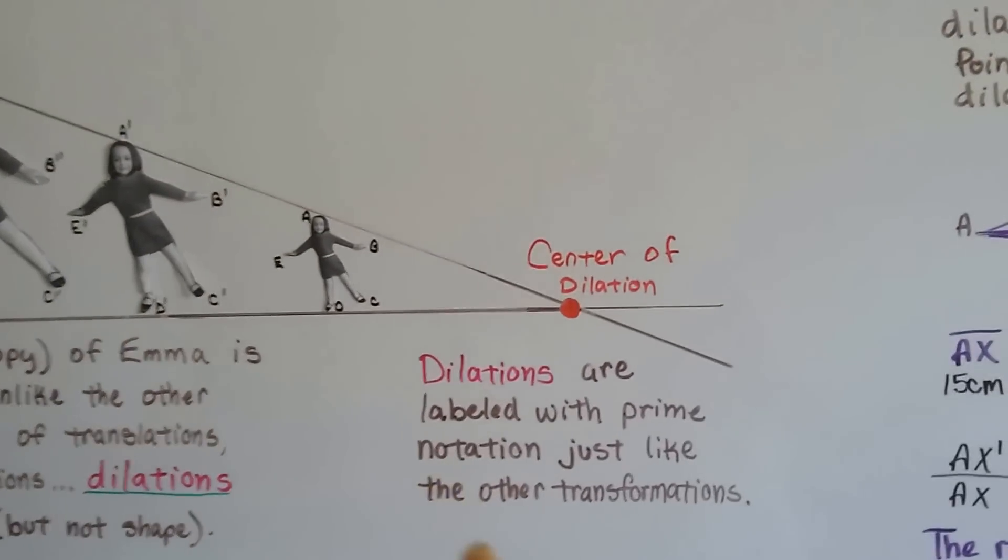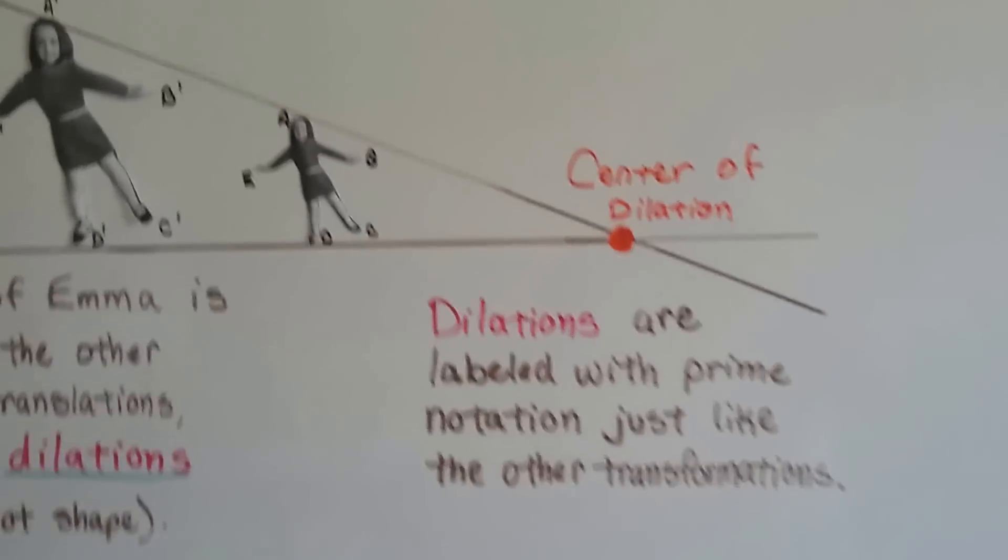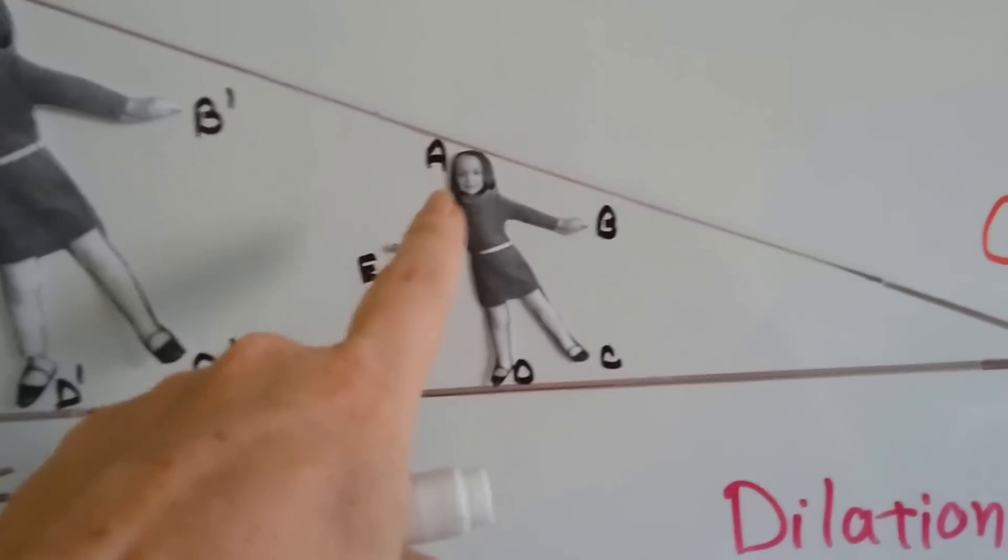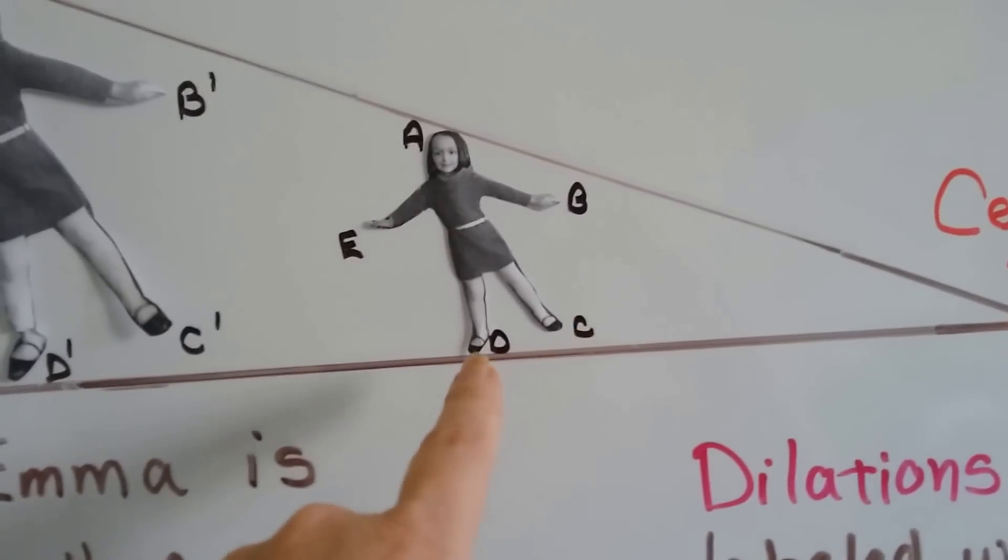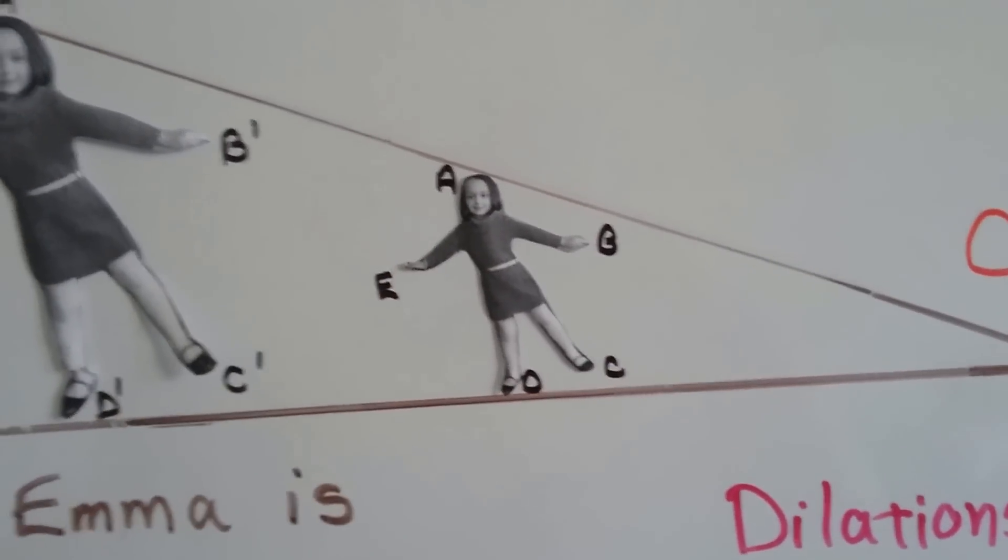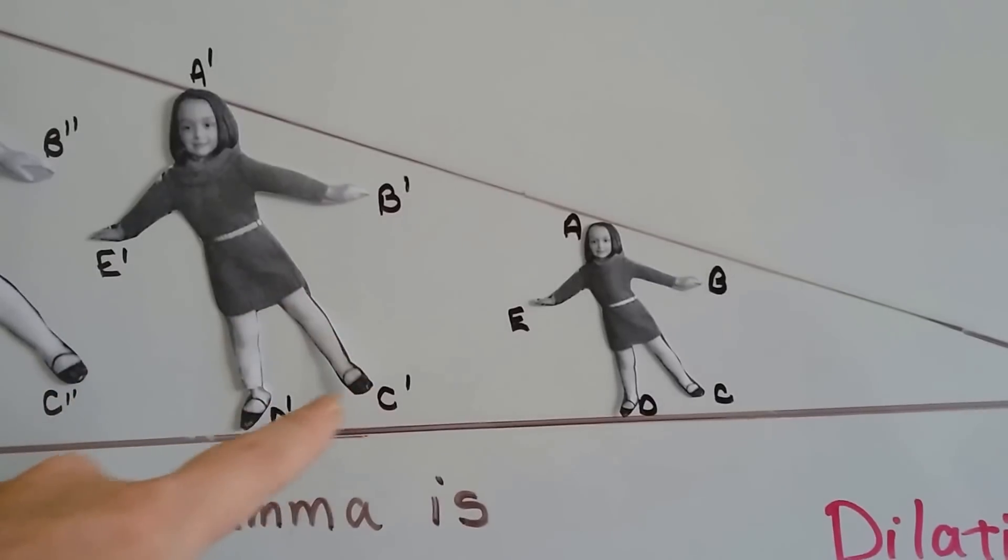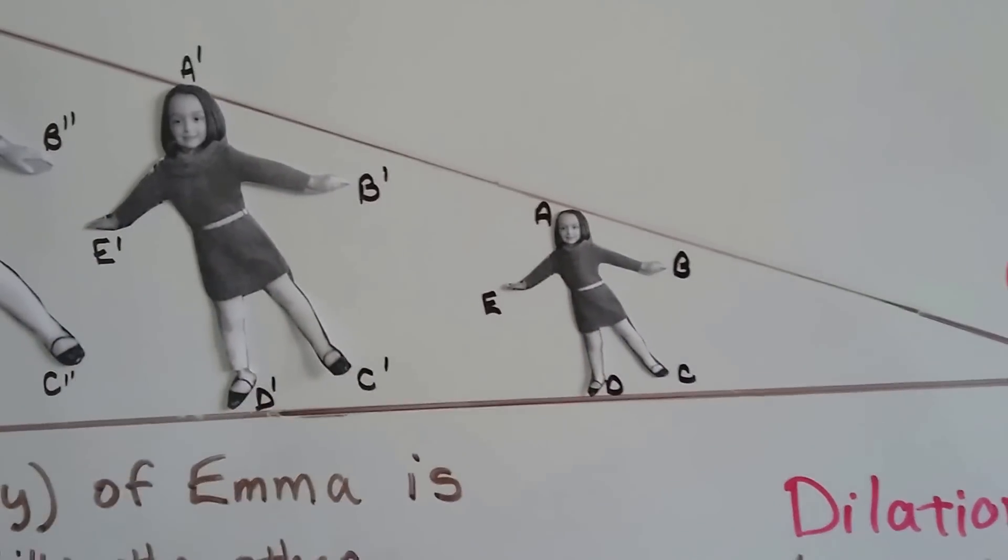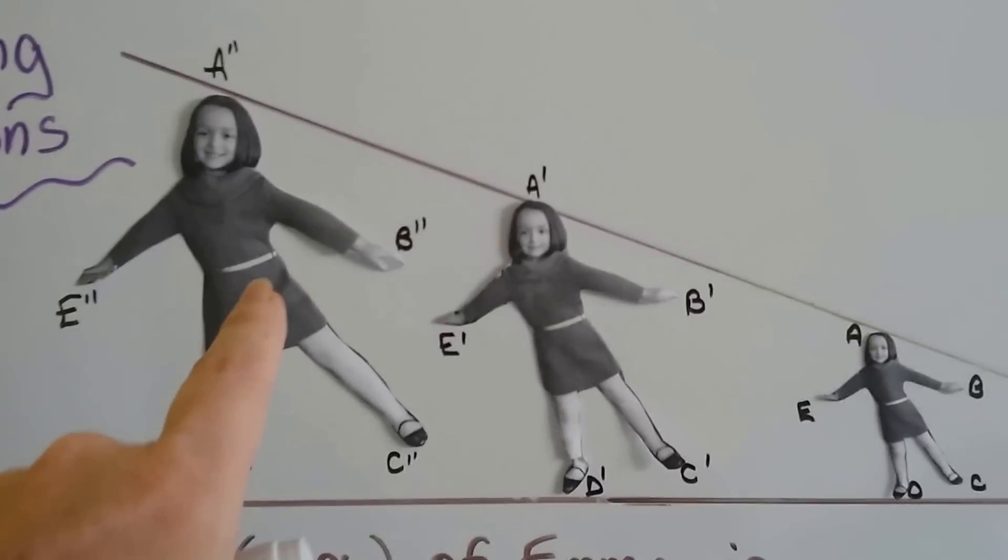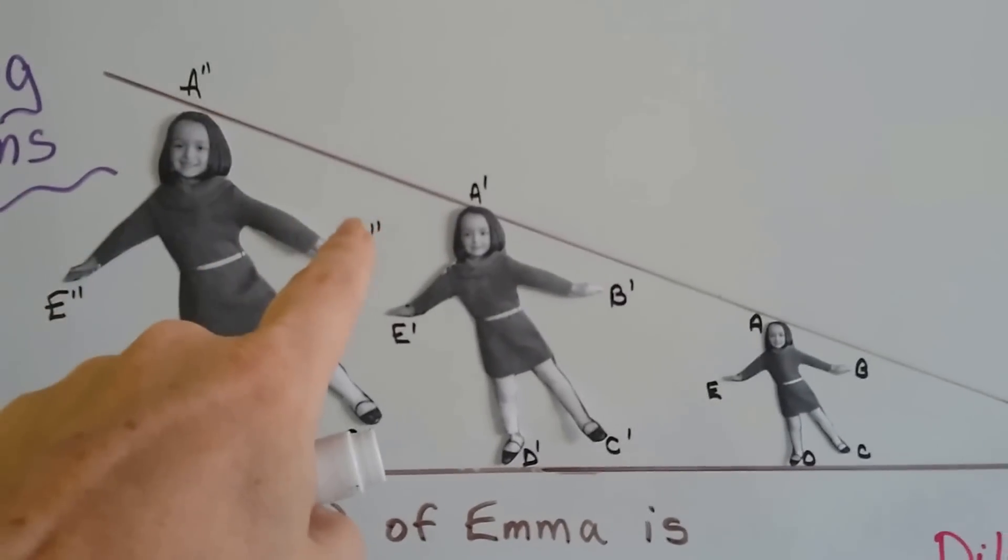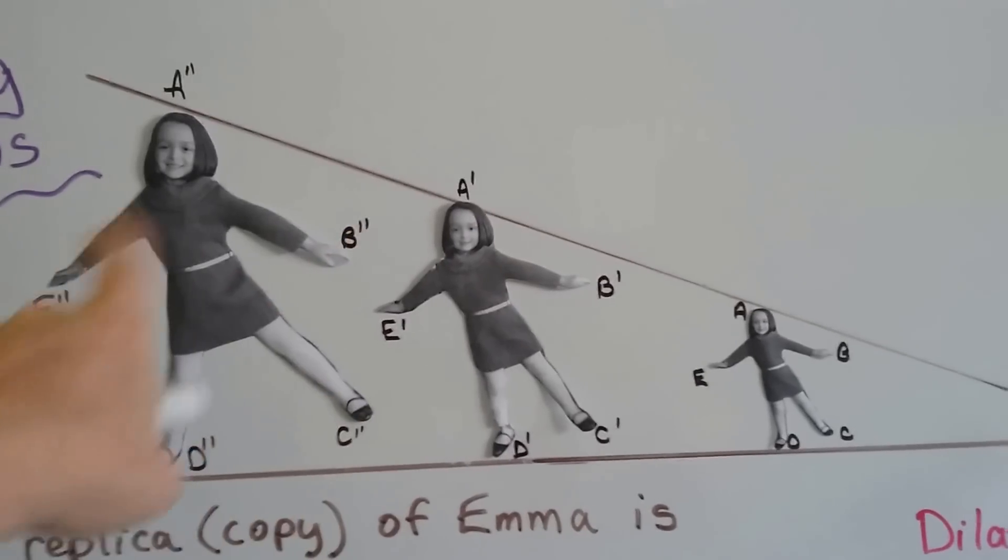And dilations are labeled with prime notation just like the other transformations. So, if you look at Emma here, she's got points A for her head, B for this hand, C for that leg, D for that leg, and E for that hand. And in the dilation, that becomes A prime, B prime, C prime, D prime, E prime, just like with the other transformations we did in the last chapter. And this one becomes A double prime, B double prime, C double prime.